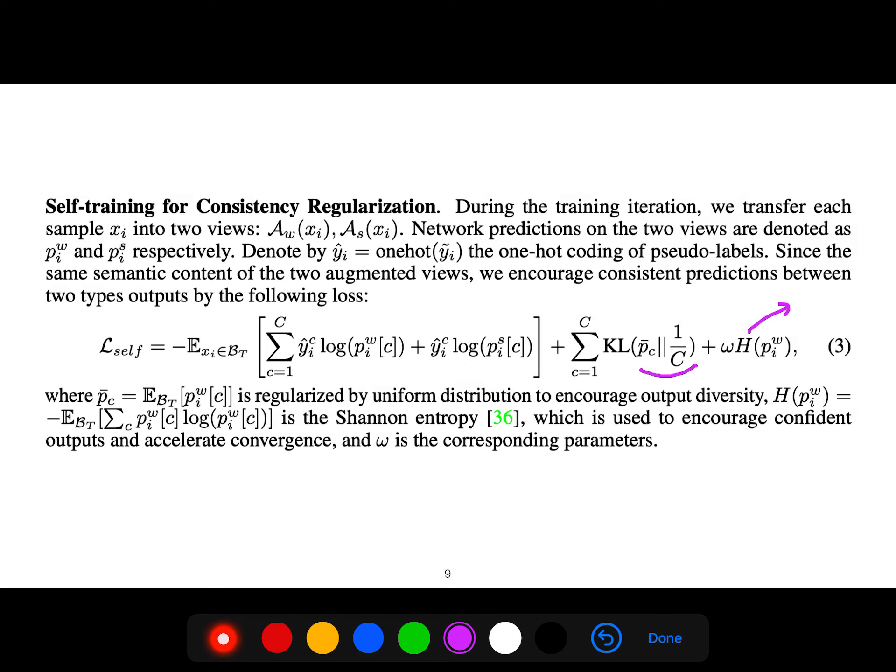Network predictions in two views are denoted as p_w and p_s respectively. y_i is the one-hot encoding of y_tilde, which is our pseudo-label.